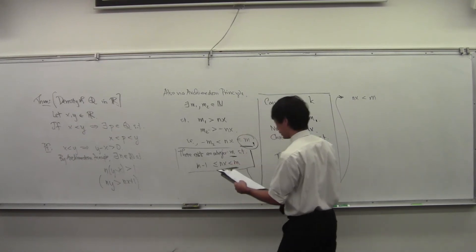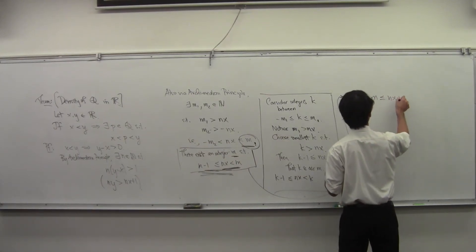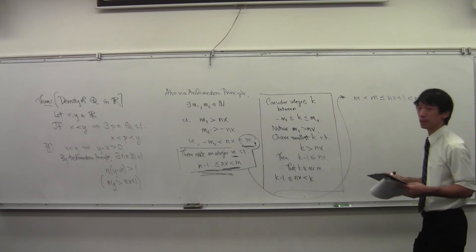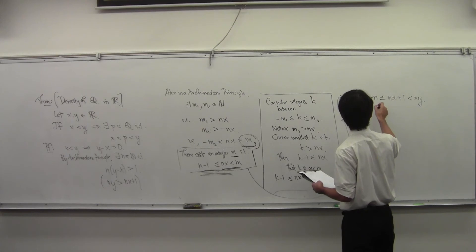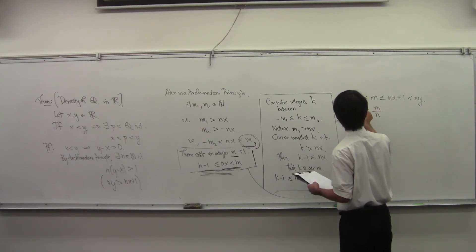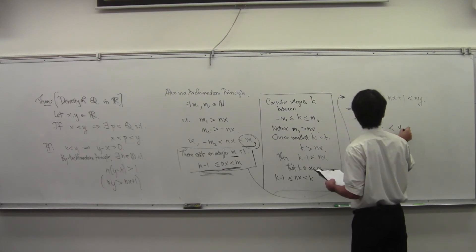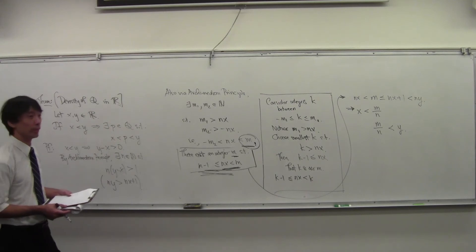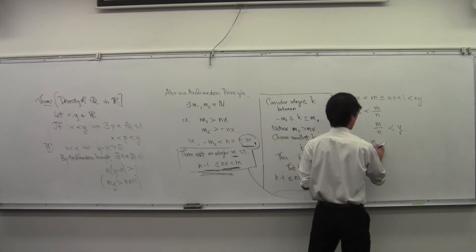So then what do we have? We have M is bigger than NX. We also have M is less than or equal to NX plus 1. But NX plus 1 was less than NY. And then if we divide through, M over N is greater than X, but we also have M over N is less than Y. And so we found the rational number that's trapped between X and Y. So M over N is our P, the P we're looking for.